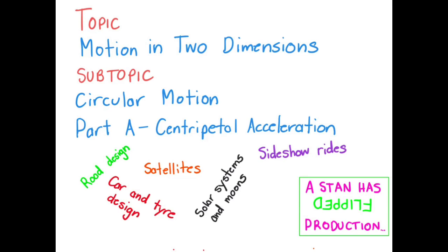Welcome to our next flipped physics video. We're still looking at the motion in two dimensions topic and we're now on to the circular motions subtopic. We're going to start off in this first video looking at centripetal acceleration. This is physics that's important for things like road design and car and tyre design. It's also important for looking at the physics of launching satellites and the orbits of satellites, solar systems, and moons — we're going to study that in detail in the next gravitation and satellites topic.